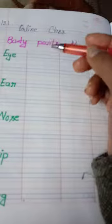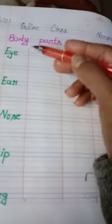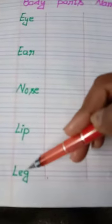Our English topic today is body parts name. Body parts name. See, eye, ear, nose, lip, leg.